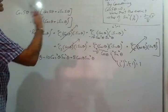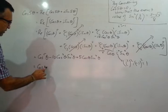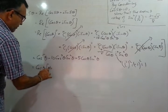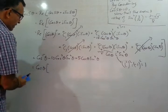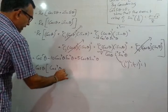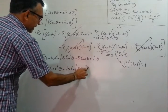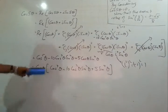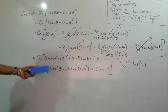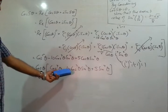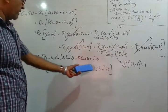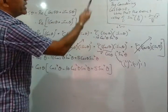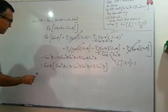Looking at the target answer, they want cosθ factored out. So let's take out the cosθ. This gives us cosθ times (cos⁴θ − 10cos²θ·sin²θ + 5sin⁴θ). Things are looking good because we have sin⁴θ there. The only thing is all terms still involve cosine, so let's convert everything to sine.